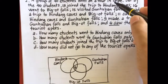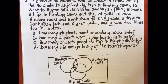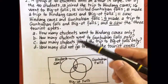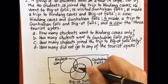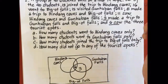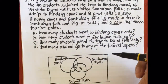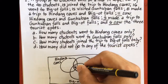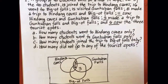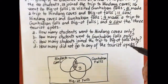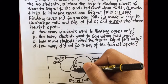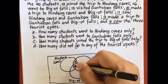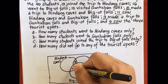Next, 9 made a trip to Gunhuban Falls and Bigot Falls — that intersection already has 6, so 9 minus 6 is 3. Then 11 saw Hindang Caves and Gunhuban Falls — the intersection of those two is 11 minus 6 equals 5. Then 8 made a trip to Hindang Caves and Bigot Falls — we already have 6, so 8 minus 6 is 2.